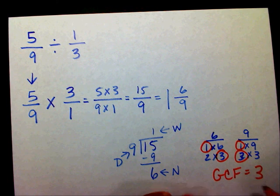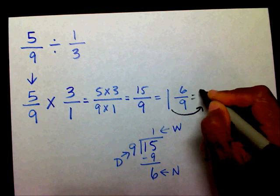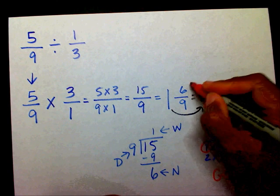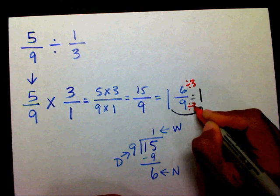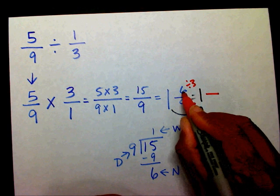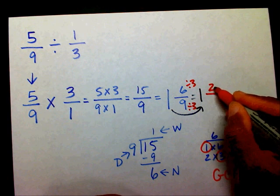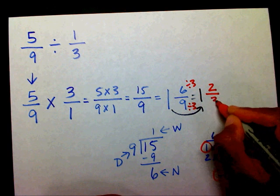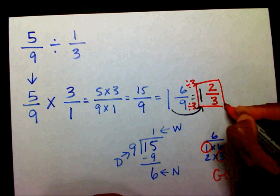So what I'm going to do now, I'm going to bring my one over, and I'm going to divide my numerator by three and my denominator by three. Six divided by three is two — that's going to be my new numerator. Nine divided by three is three — that's going to be my new denominator. So this is my final answer.